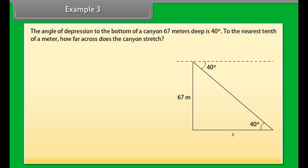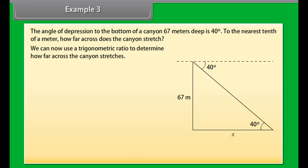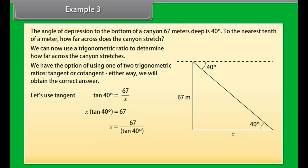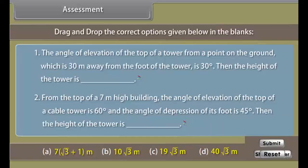Example 3: The angle of depression to the bottom of a canyon 67 meters deep is 40°. To the nearest tenth of a meter, how far across does the canyon stretch? Start by drawing a diagram — the angle is 40° from the horizontal. We can use tangent: tan 40° = 67 / x, so x × tan 40° = 67, giving x = 67 / tan 40° = 79.76 meters. Therefore the canyon stretches 79.76 meters across.